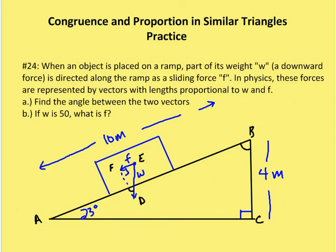Problem 24: when an object is placed on a ramp, part of its weight W (a downward force) is directed along the ramp as a sliding force F. These forces are represented by vectors with lengths proportional to W and F. Vector F is the force sliding down the ramp, and W is the weight of the object directed downward by gravity. We want to find the angle between the vectors, and if W equals 50, find F.